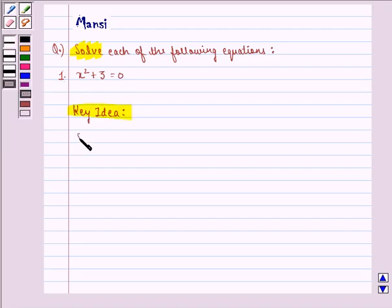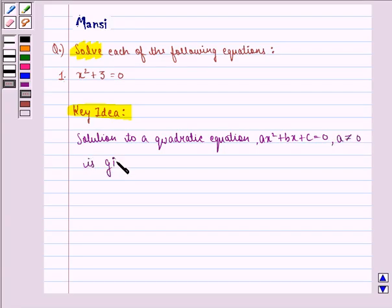We see that solution to a quadratic equation ax square plus bx plus c equal to 0 where a is not equal to 0 is given by x is equal to minus b plus minus under the root b square minus 4ac the whole divided by 2a.